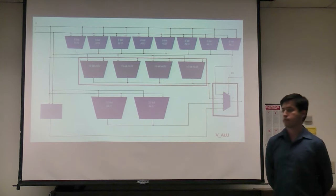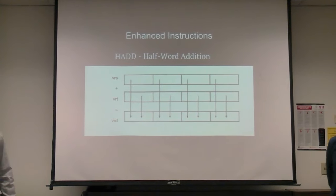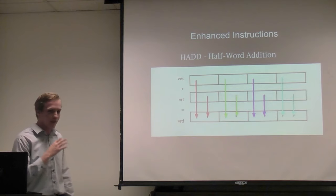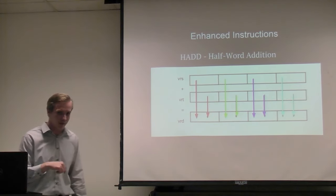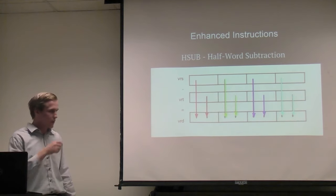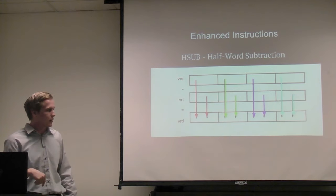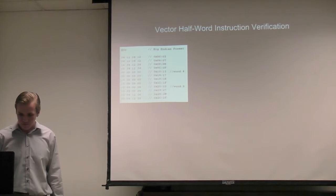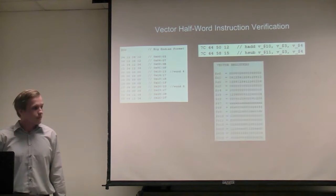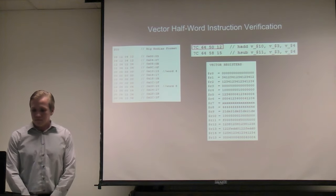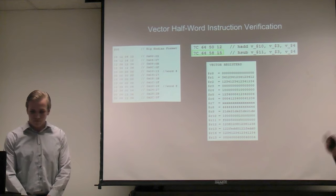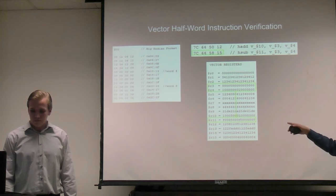Now we'll cover half-word operations using the function select. The H-add instruction is half-word addition — similar to byte addition, but splits the 64-bit value into four 16-bit fields and adds them individually. H-sub is the same, separating into four 16-bit fields and storing the result in the respective destination register after subtraction. For verification, two instructions are run: H-add on registers 3 and 4 stores into register 10, and H-sub on registers 3 and 4 stores into register 11. The results are shown.